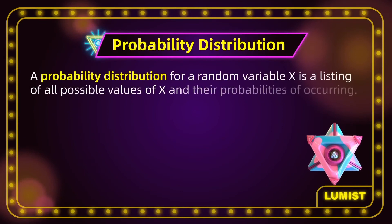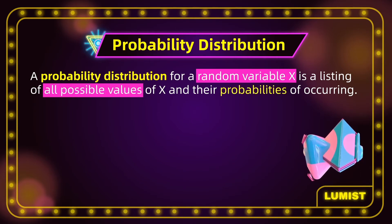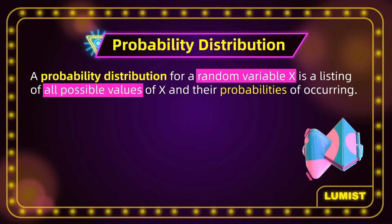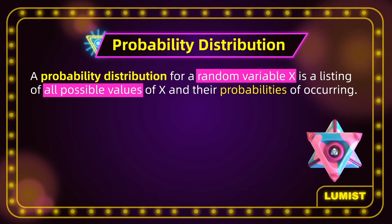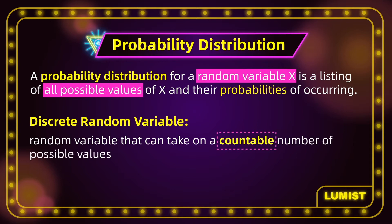A probability distribution for a random variable x is a listing of all possible values of x and their probabilities of occurring. The simple way to think of a probability distribution is the way to represent how probabilities of different outcomes are distributed. It is important to note that for this video, we will focus only on discrete random variables. Remember that discrete random variables can take on a countable number of possible values, and are usually denoted as P(X = x), which says the probability that the random variable X is equal to a particular value x.